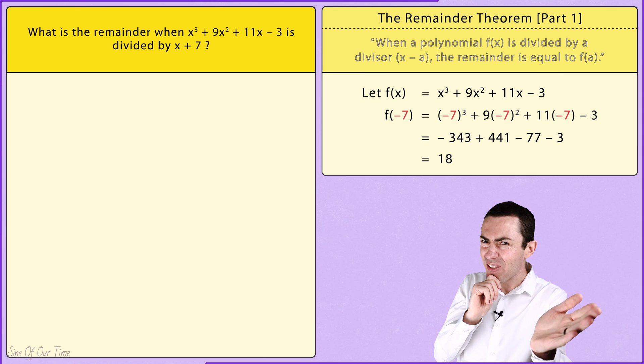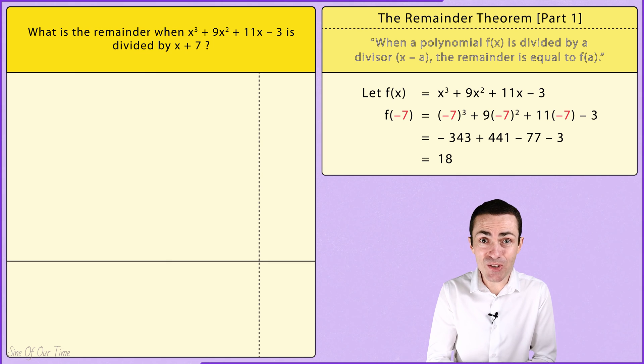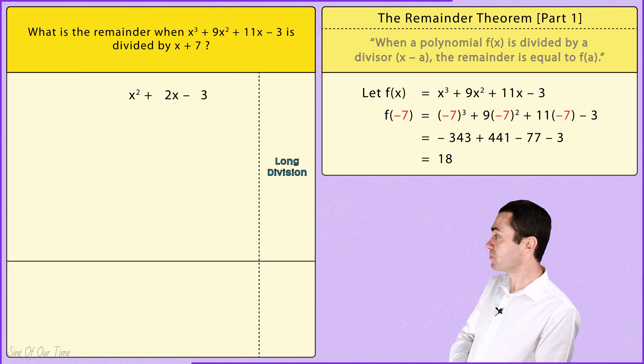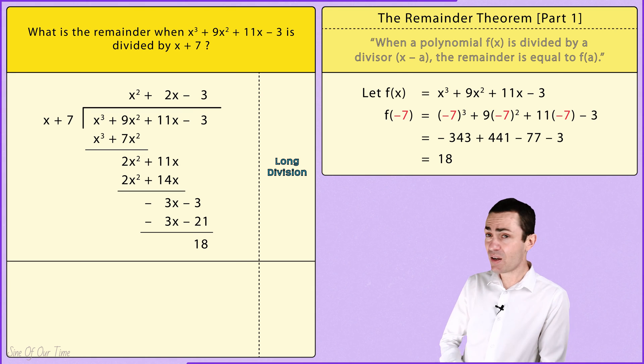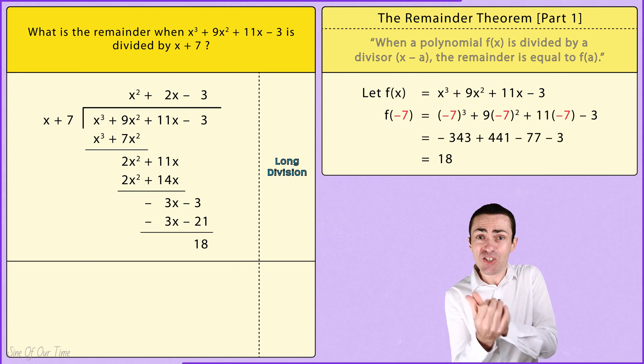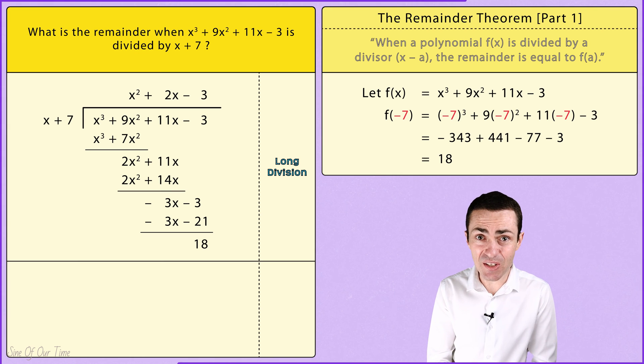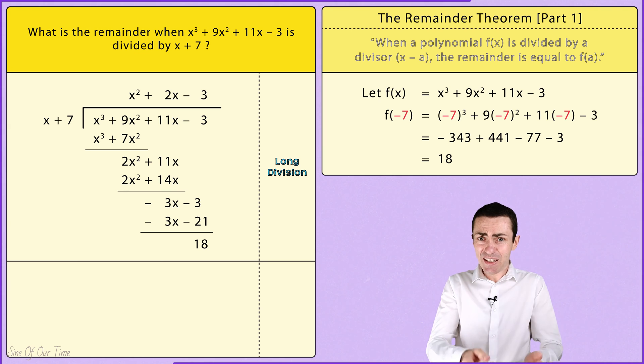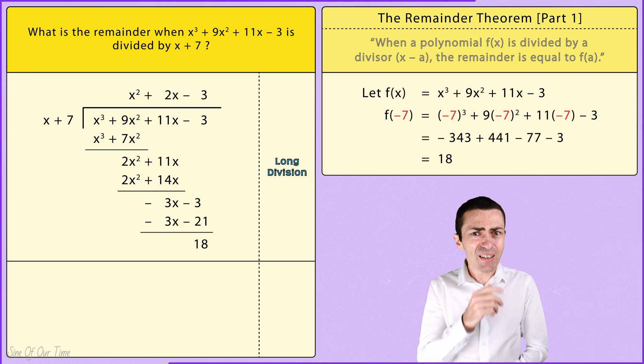But can we trust it? Well, let's check by using the tried and tested method of long division. Now you can go ahead and check this calculation for accuracy, but basically what it's telling us is that the remainder is 18.